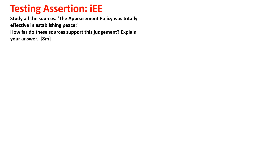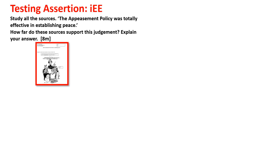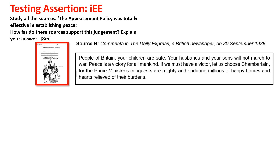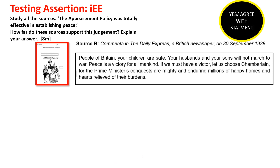So next we are looking at another source from this particular worksheet. Let's look at this source in a bit more detail. In this particular source, it is published in a British newspaper. Look at the words being used: 'People of Britain, your children are safe. Your husbands and your sons will not march to war. Peace is a victory for all mankind.' So it feels that Chamberlain has been quite successful — the appeasement policy was effective because people did not have to go to war. And this is definitely a yes source.